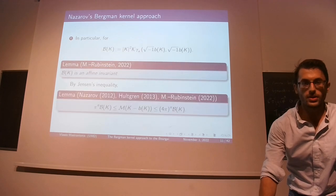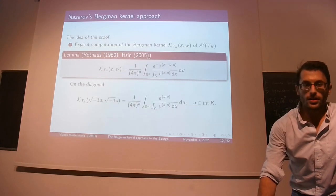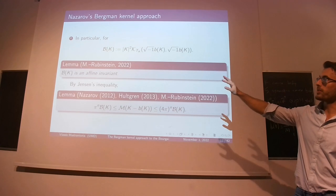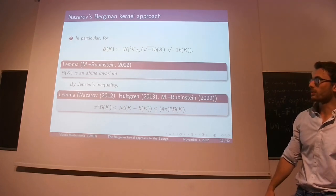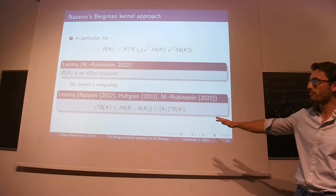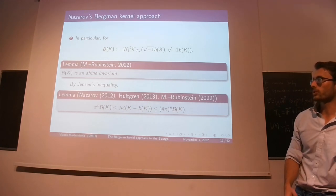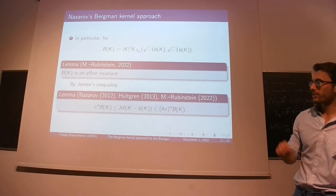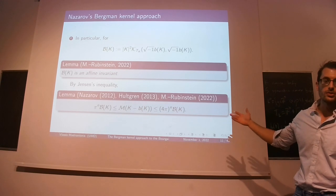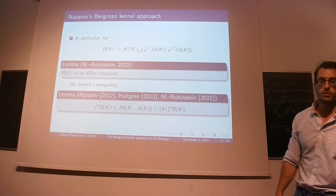The second step: we would like to multiply the Bergman kernel by the volume of K squared and call this Bk, because it behaves a bit better. For example, Bk is an affine invariant. We also have an inequality connecting B and M, first given by Nazarov for symmetric bodies, then by Hultgren in a more general setting of functions centered at the origin, and then we reformulated it in terms of B and M with an upper bound. The upper bound is not needed for the proof of Bourgain-Milman, but it's interesting in general. It follows from Jensen's inequality.